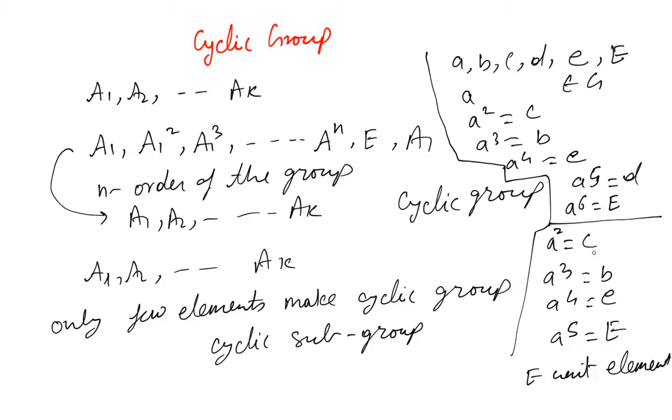But here only a, b, c, e and capital E has been repeated. And if we try to find a⁶ then a⁶ is going to be nothing but a itself. So we come back to a but we missed d here. So this group a, b, c, e and E is a cyclic subgroup.